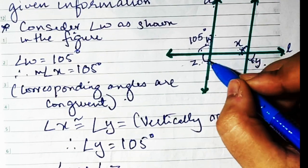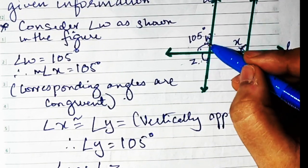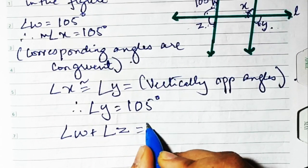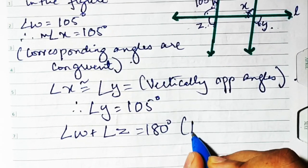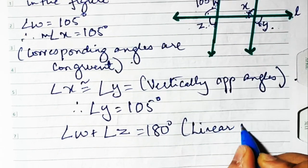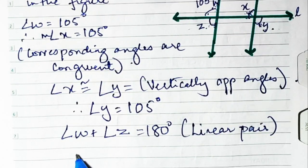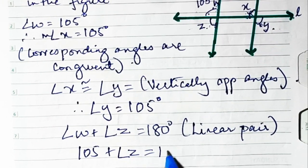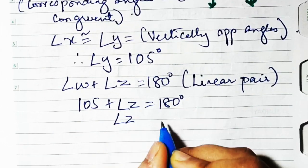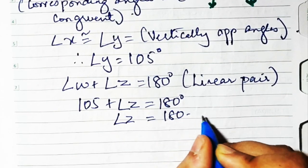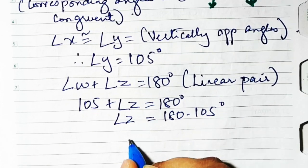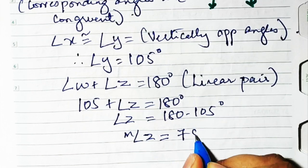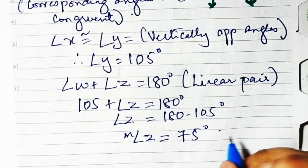Now w and z are forming a linear pair, so they measure 180° together. Measure of angle w plus measure of angle z equals 180°. Since w is 105°, we get 105° plus z equals 180°, so angle z equals 180° minus 105°, which gives z equals 75°.